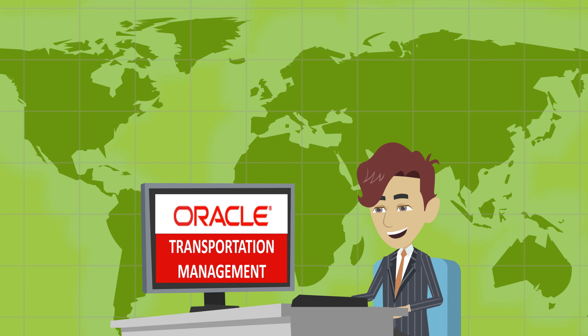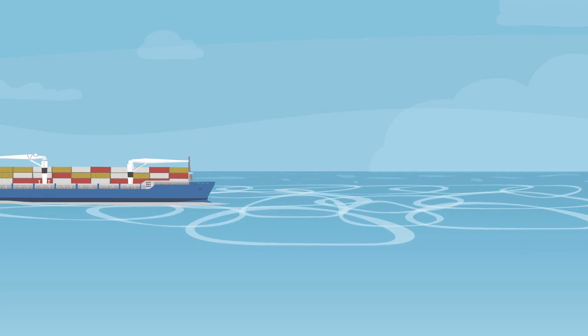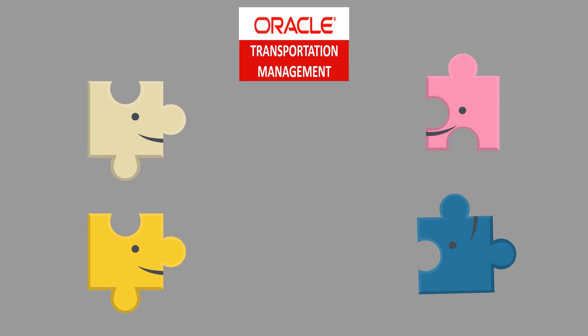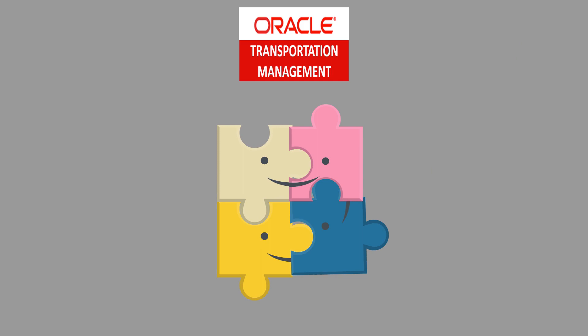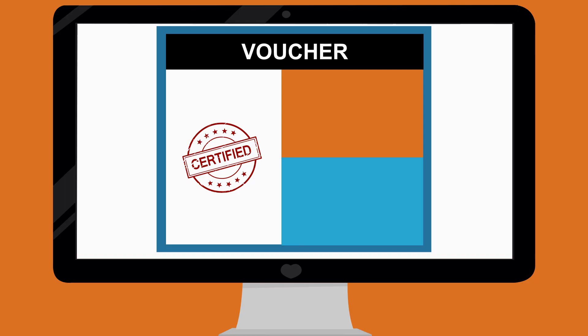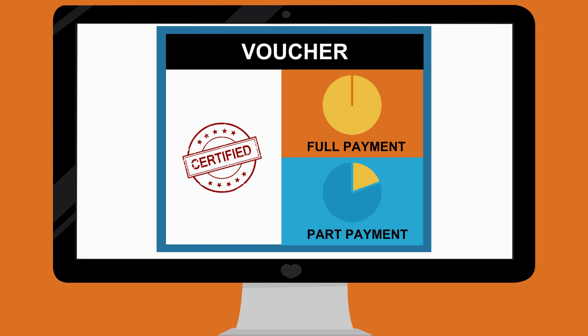Payment invoices can be manually entered into OTN, created from a buy shipment, or sent into OTN via integration. Vouchers document the authorization to pay all or part of a payment invoice.